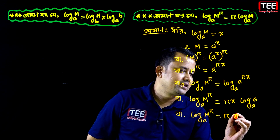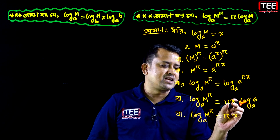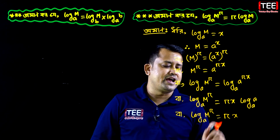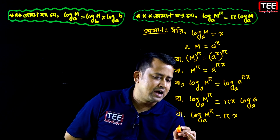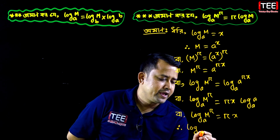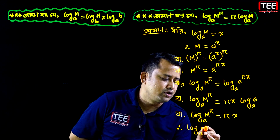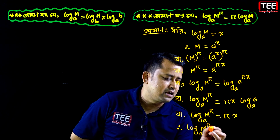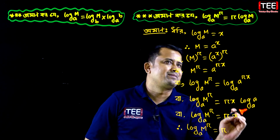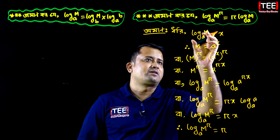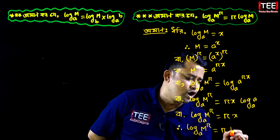Since log base a of a equals 1, we get 1 times rx, which equals rx. Therefore log base a of m to the power r equals rx. Since we assumed log base a of m equals x, we substitute back.